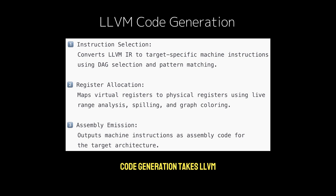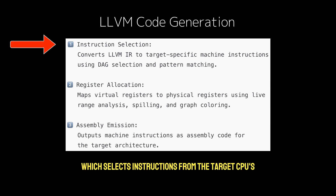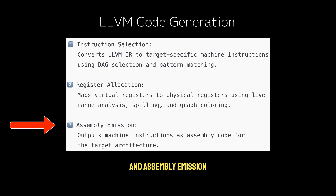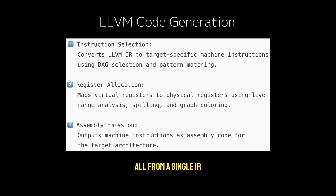To recap: LLVM code generation takes LLVM IR and produces platform-specific assembly in three stages — instruction selection (selecting instructions from the target CPU's instruction set), register allocation (mapping virtual registers to physical CPU registers), and assembly emission (writing assembly or machine code). Every CPU architecture requires a unique approach, and LLVM makes it possible to target them all from a single IR.